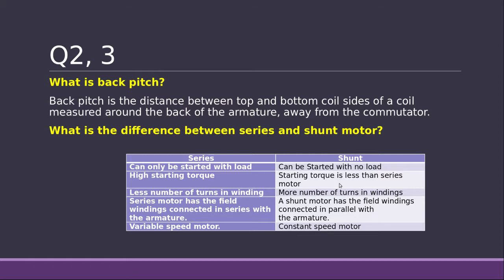Less number of turns in winding for series motor. More number of winding turns in shunt motor. Series motor has field windings connected in series with armature. The term is very clear. So it is series. The shunt motor has got field windings connected in parallel.